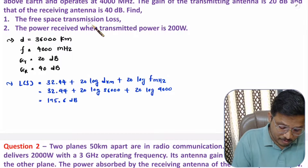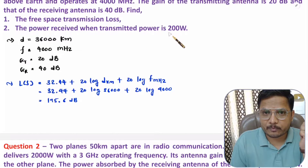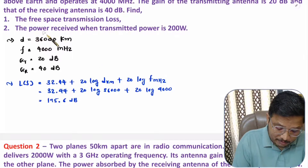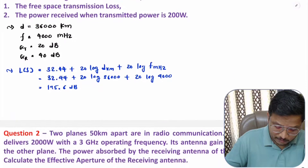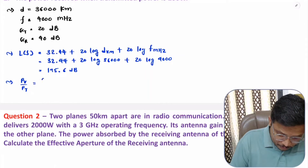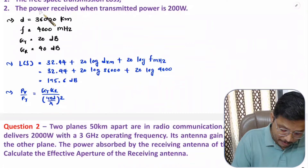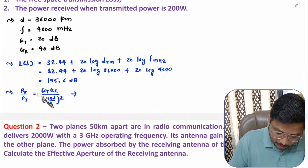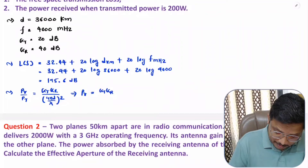The second part is to find the power received when the transmitted power is 200 watts. We will use the Friis transmission equation: received power divided by transmitted power equals Gt × Gr divided by (4π × d/λ)². We need to rearrange to solve for received power: Pr = Gt × Gr × Pt / (4π × d/λ)².